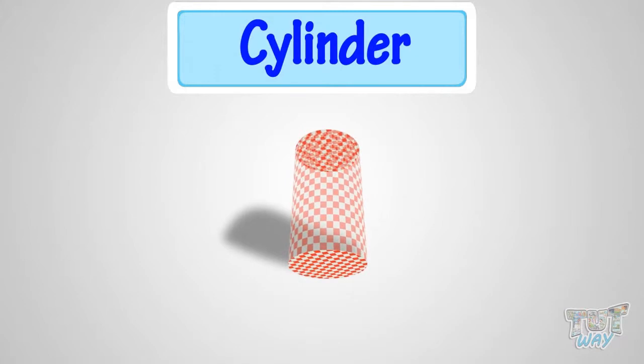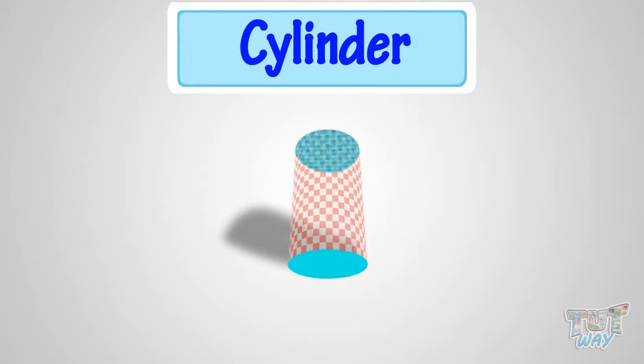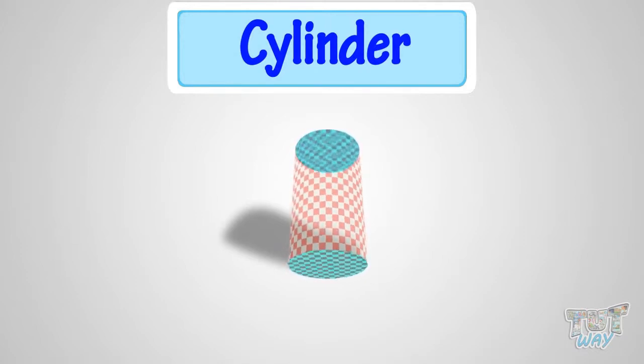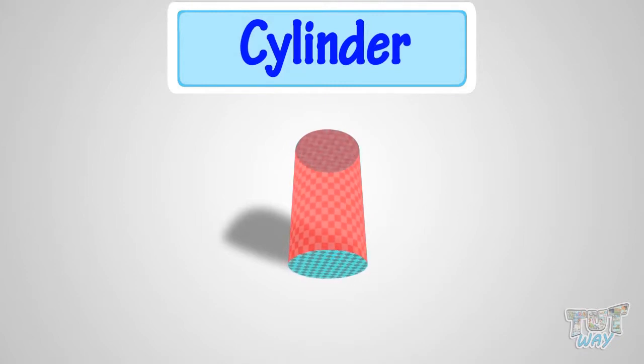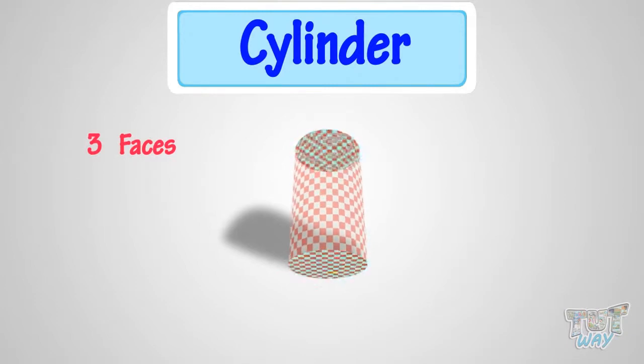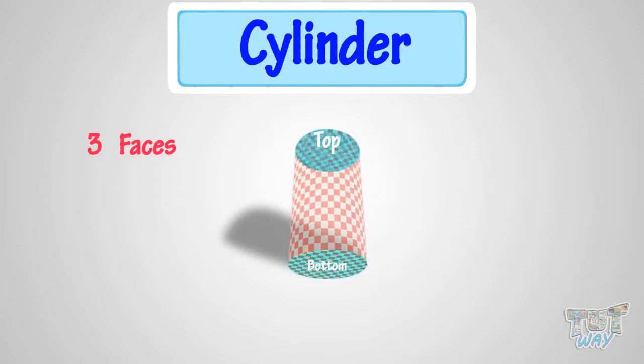Let us start with a cylinder. A cylinder is a 3D figure with two parallel bases, which are usually circular, connected by a curved surface. So it has three faces: two flat round shaped faces, one at the top and one at the bottom.